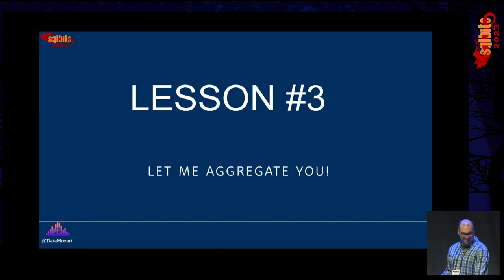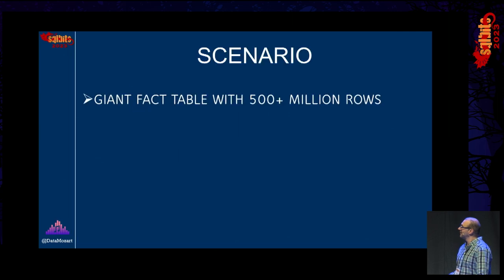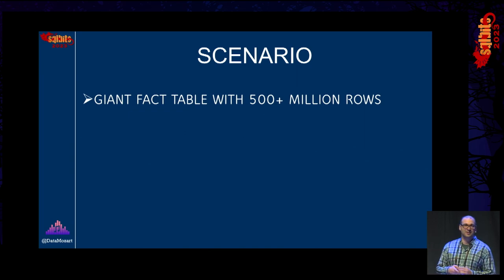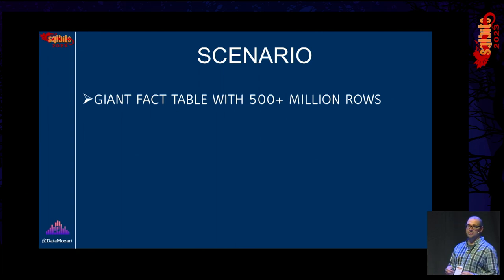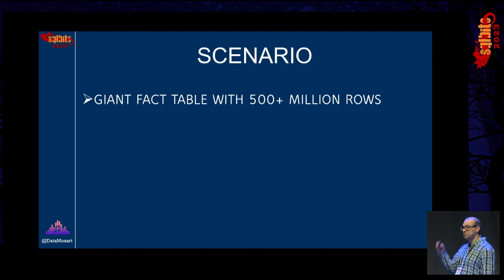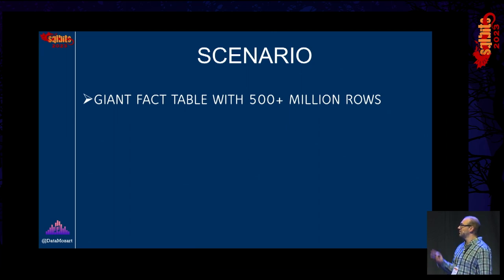Lesson number three. We're back to DirectQuery scenarios. I'm a big opponent of DirectQuery, but sometimes we simply need to use it. In this case: a really huge fact table, 500 million-plus rows. The client mostly works with SQL — they're not Power BI people. They asked how to create a model where most analytic queries target aggregated data, but there must also be the possibility to drill down to a single transaction. That's a perfect use case for composite models — build aggregated tables in import mode, similar to lesson one.